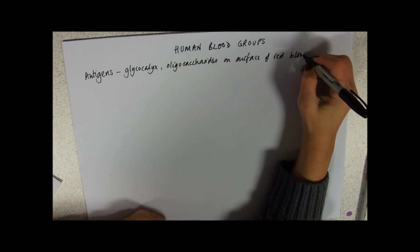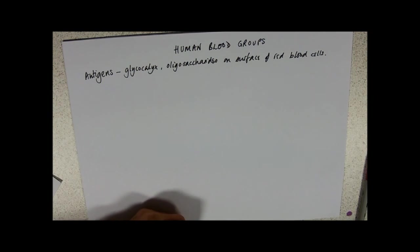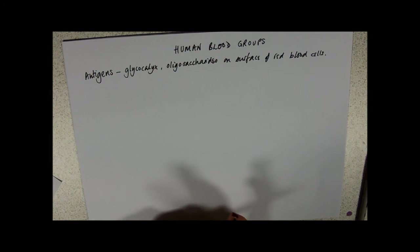Now actually all of your cells have these antigens on the surface. All of your cells have antigenic properties. But particularly in human blood groups, we're talking about having A antigen, B antigen, or no antigens at all.